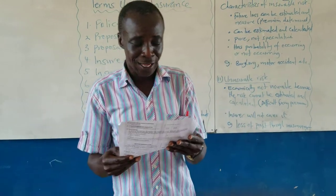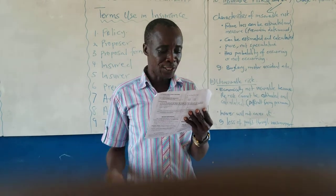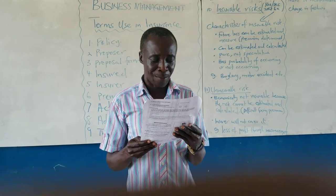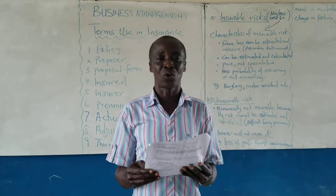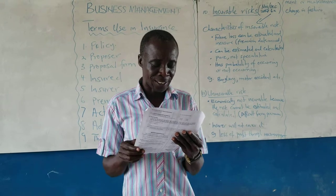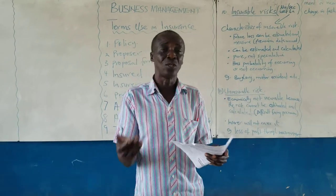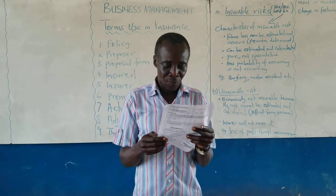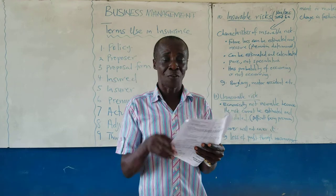If you are a vehicle owner and want to insure your vehicle, you fill this form. Some of the things on this form include: full name of proposer, age, address, nationality, house number, email, occupation, mobile number, and telephone number. Then under particulars of the vehicle: registration number, make and model, type of body, engine capacity, year of manufacturing, and seating capacity.